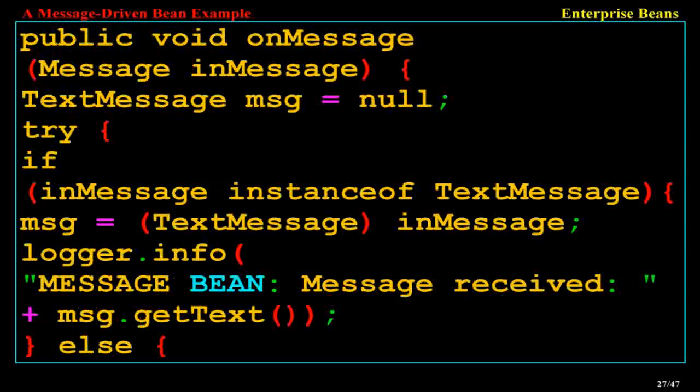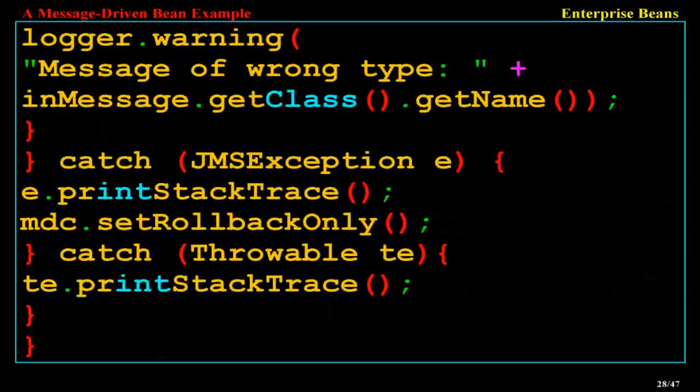The onMessage method code: public void onMessage(Message inMessage) { TextMessage msg = null; try { if (inMessage instanceof TextMessage) { msg = (TextMessage) inMessage; logger.info("Message bean: message received: " + msg.getText()); } else { logger.warning("Message of wrong type: " + inMessage.getClass().getName()); } } catch (JMSException e) { e.printStackTrace(); mdc.setRollbackOnly(); } catch (Throwable t) { t.printStackTrace(); } }